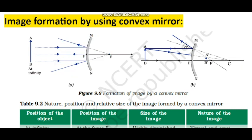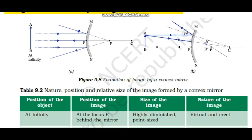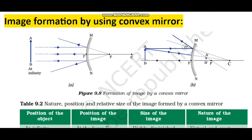In the next case, we will place the object between infinity and the pole of the mirror. In convex mirror we only discuss two cases, because for all object positions the image will be virtual and erect. In concave mirror we discussed six cases: object at infinity, beyond C, at C, between C and F, at F, and between pole and focus. But in convex mirror, we discuss only two cases.